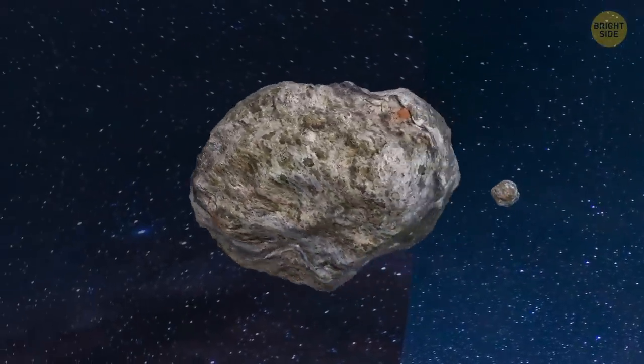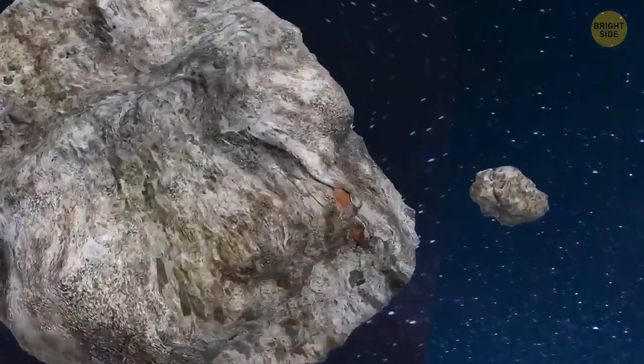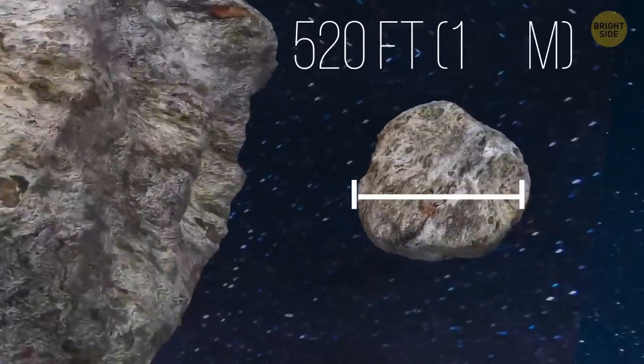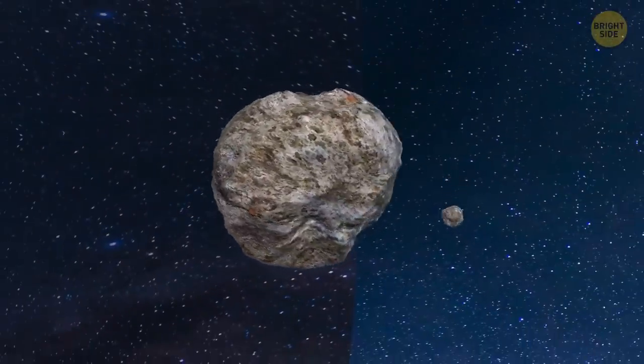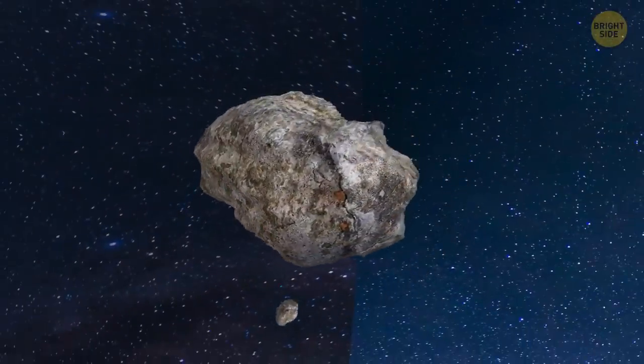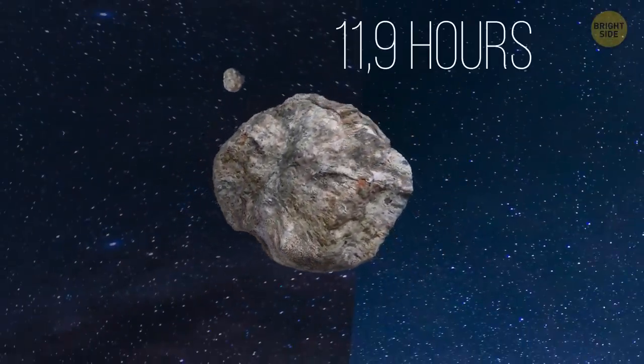Plus, it has an asteroid companion. It's a small pebble 520 feet wide. It's like 12 school buses or 10 train cars. Its orbital period, that is, the time it takes the pebble to make a complete circle around the asteroid, is about 11.9 hours.